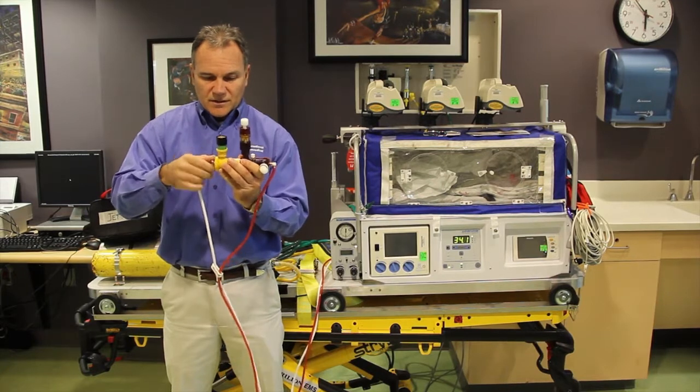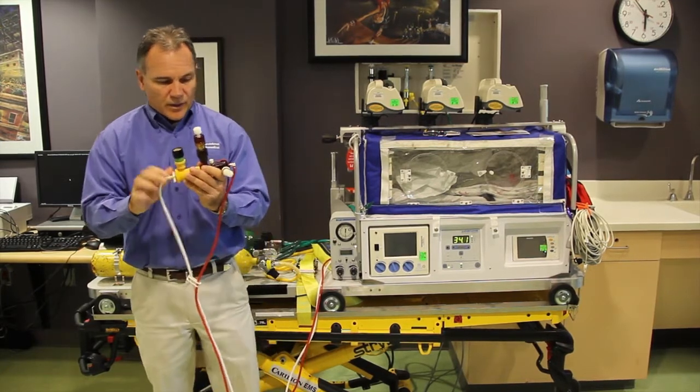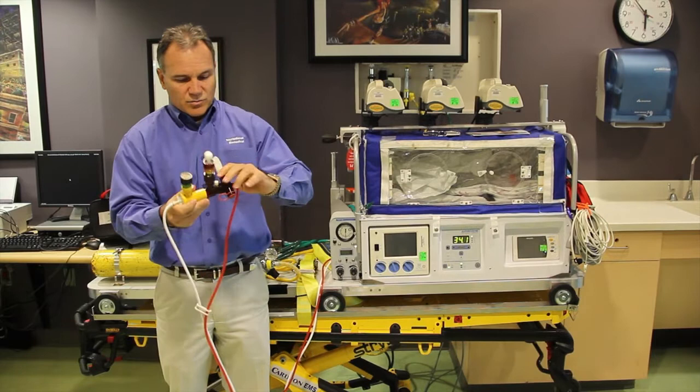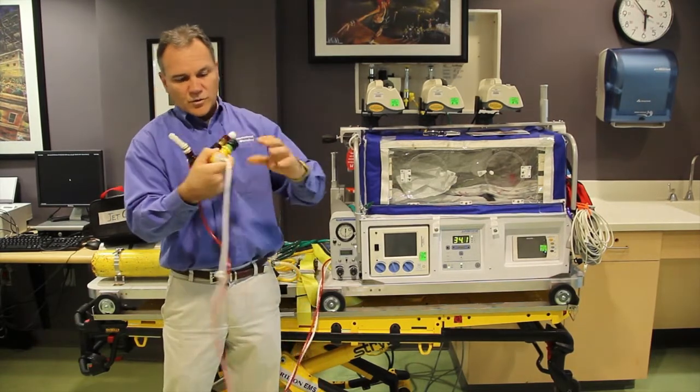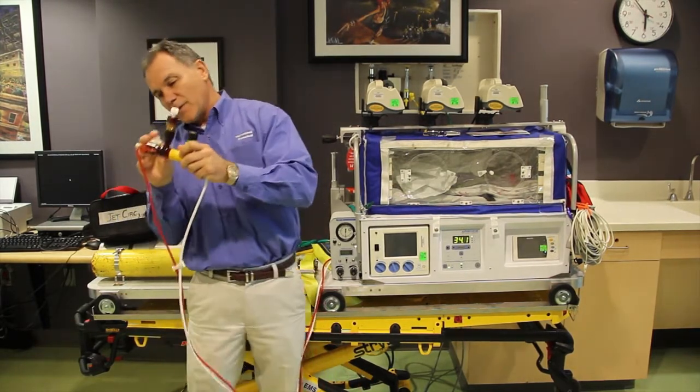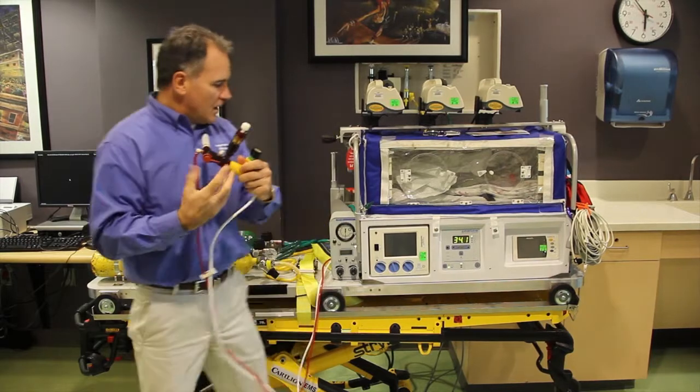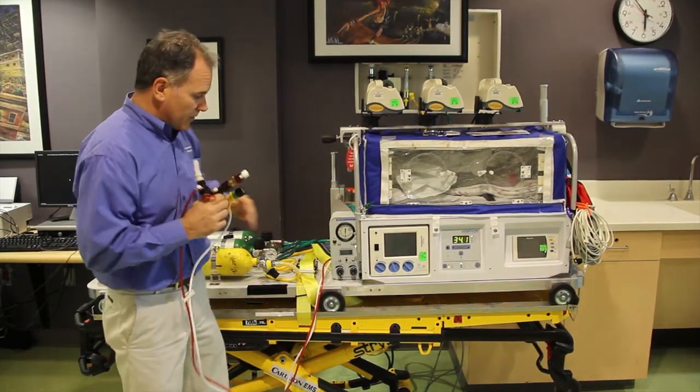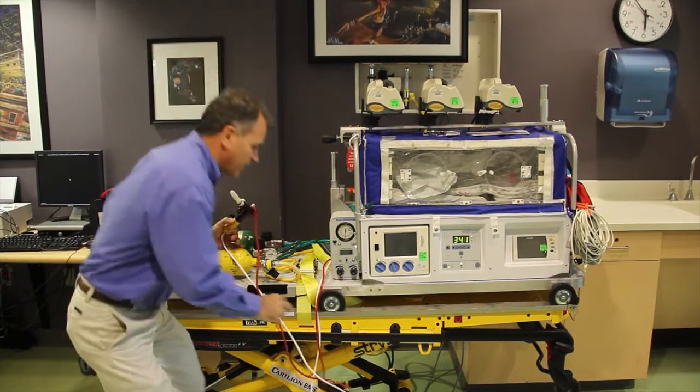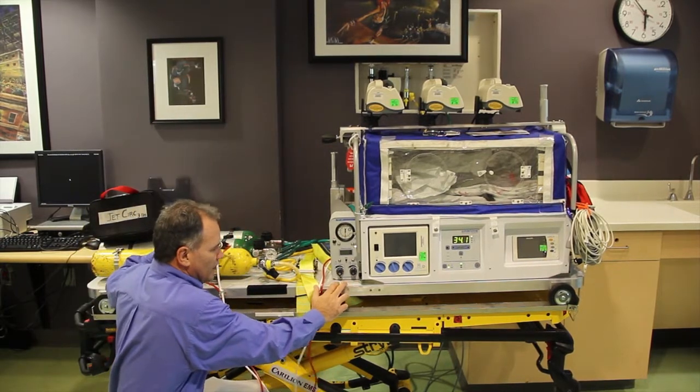I'm going to put this back in and put that into the Phasetron and T on the inspiratory limb. So again, this is the Phasetron. This is where the ET tube will go, normally inside the incubator with the patient right here. I'm going to move on to the TXP ventilator.